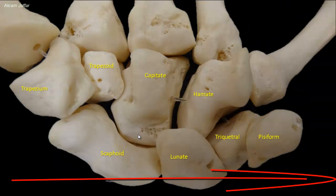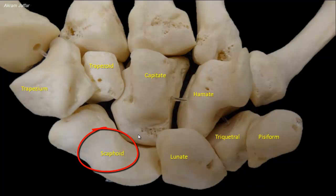From lateral to medial, the four carpal bones of the proximal row are the scaphoid, lunate, triquetral or triquetrum, and pisiform.